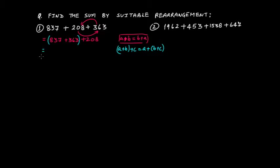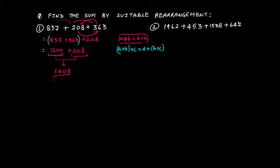Now if you add 837 plus 363: 837 → 840 → 900 → 1200. So 837 plus 363 equals 1200, and then plus 208. You can see we got a zero digit at the last, which simplifies the problem. Now 1200 plus 208 equals 1408. You see how easily we got the answer.